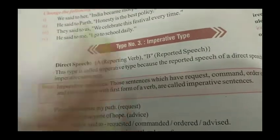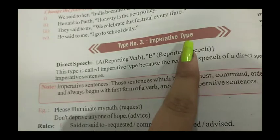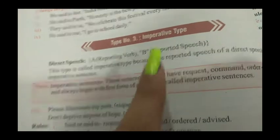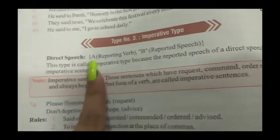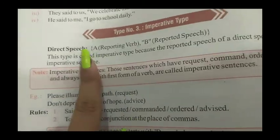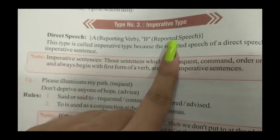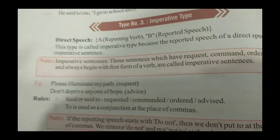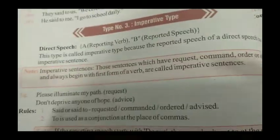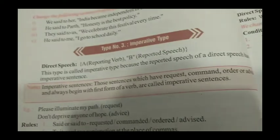Type number 3 is imperative type. In imperative type we will read about direct speech, reporting verb and reported speech. This type is called imperative type because the reported speech of a direct speech has an imperative sentence.